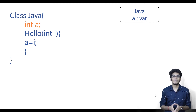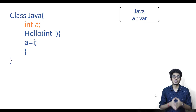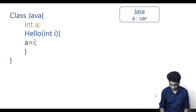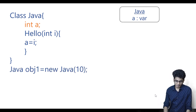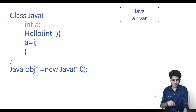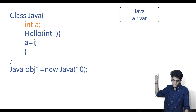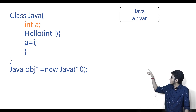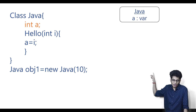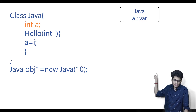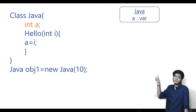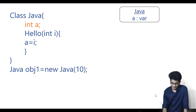The memory of the instance variable will be created in the heap. Let's say we have declared an object: 'Java obj1 = new Java()' and we are passing 10 — so for obj1, the value of 'a' will be 10.